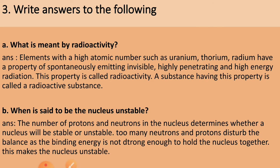B: When is the nucleus said to be unstable? Answer: The number of protons and neutrons in the nucleus determines whether the nucleus will be stable or unstable. Too many neutrons and protons disrupt the balance as the binding energy is not strong enough to hold the nucleus together, making the nucleus unstable.